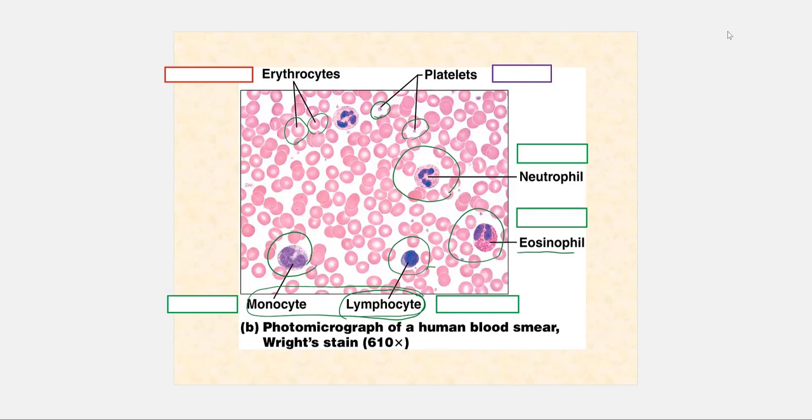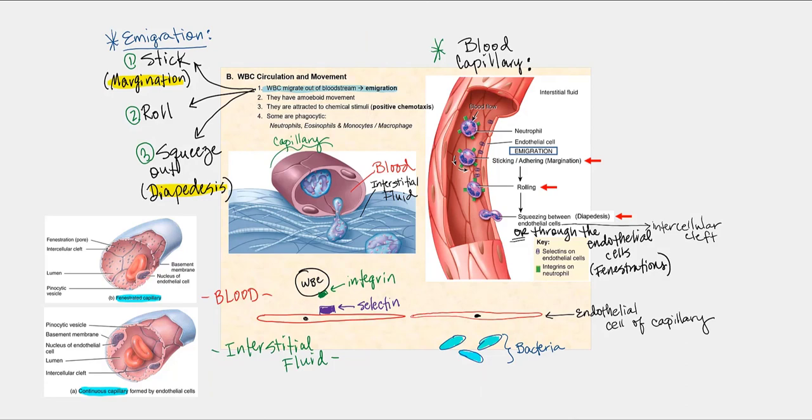Looking at the granulocytes, one is missing — if you answered basophil, you are correct. We have the neutrophils and the eosinophils shown, but the basophil is not shown because they only account for 0.5 to 1 percent of all leukocytes. Also, look at the platelets — remember, these are cellular fragments of a megakaryocyte, so you're not expecting to see a whole cell. When identifying platelets, look for little tiny specks. We will discuss the importance of platelets in blood clot formation later.